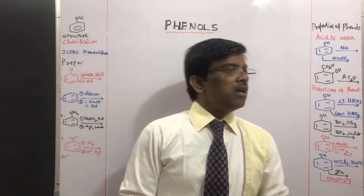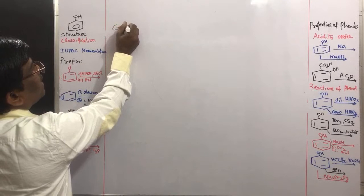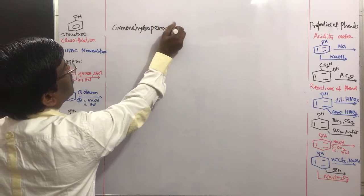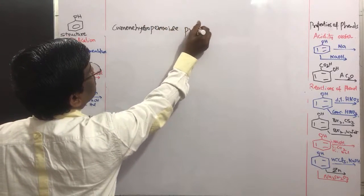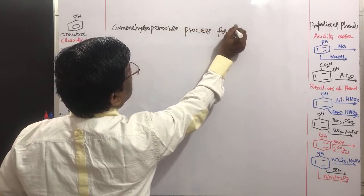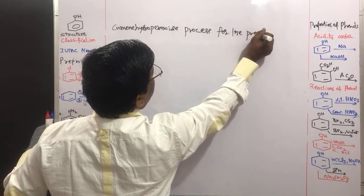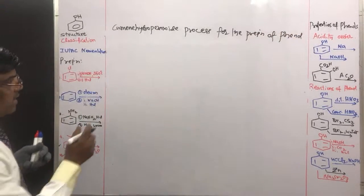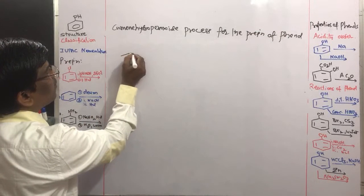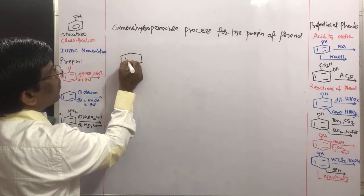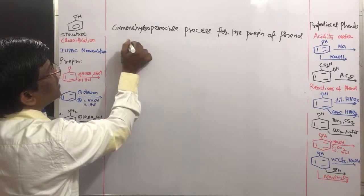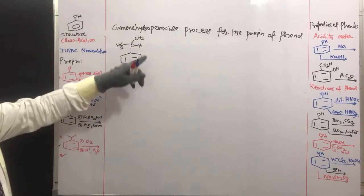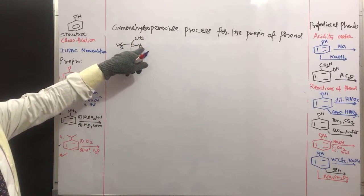Today we are going to learn phenols using the cumene hydroperoxide process. This is a commercial method for the preparation of phenol. Cumene is nothing but isopropyl benzene.